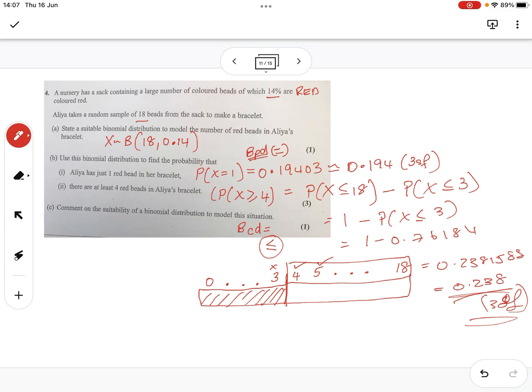Comment on the suitability. With binomial, you need to think about BNP. B is the bi part - success and failure. In this case, red or not red. N is a set number of trials - in this case, 18. P needs to be a constant probability. And the last one is independent events.